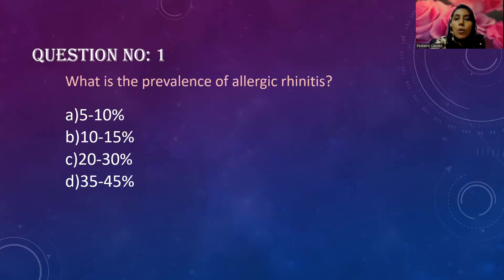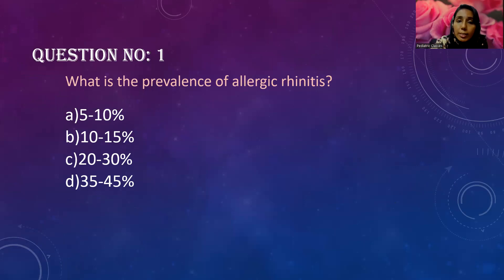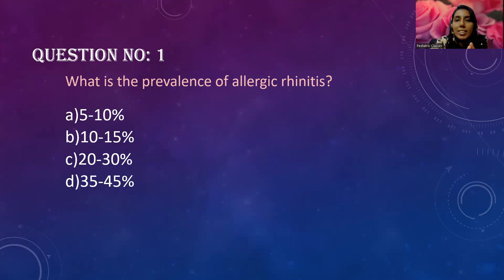The first question: what is the prevalence of allergic rhinitis? We all know allergy is very common — it is a spectrum comprising asthma, allergic dermatitis, and more. So what is the prevalence of allergic rhinitis? Option A: 5 to 10 percent; Option B: 10 to 15 percent; Option C: 20 to 30 percent; Option D: 35 to 40 percent.